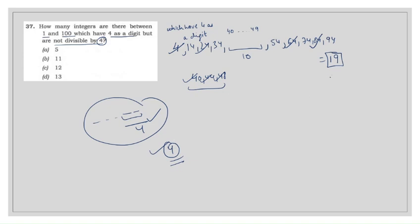After counting all numbers divisible by 4 out of the 19 numbers that have 4 in their ones or tens place, there are 7 such numbers. Subtracting 7 from 19 gives us 12. So the answer is 12 — there are 12 integers between 1 and 100 which have 4 as a digit but are not divisible by 4.